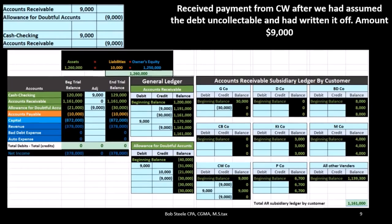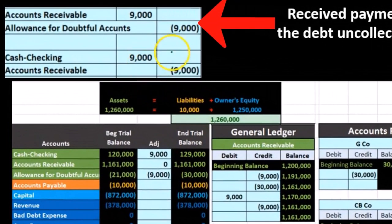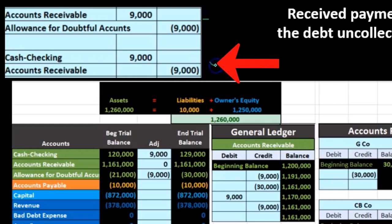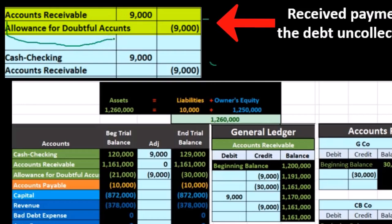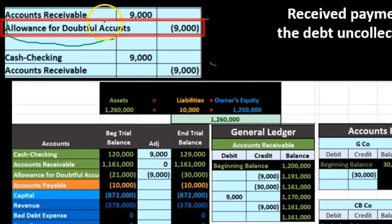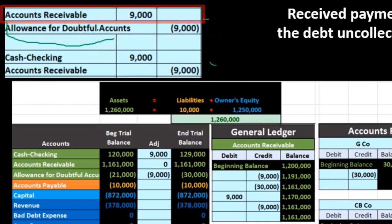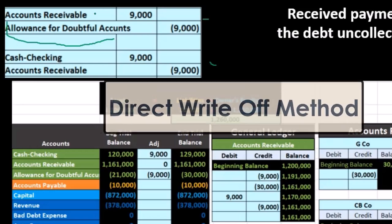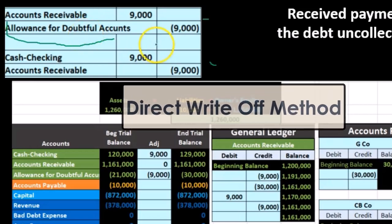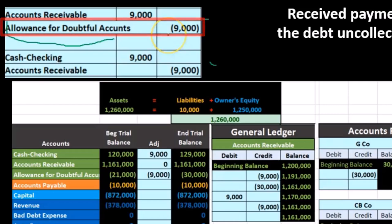If we look at the allowance method, it's the same type of activity — we're going to reverse what we did and then record the normal transaction. The only difference is this item: when we first recorded the write-off, we debited the allowance for doubtful accounts and credited the receivable. Now we're just reversing that. So we debit accounts receivable, just as we did under the direct write-off, but instead of crediting bad debt expense, we're now crediting the allowance — just reversing it.